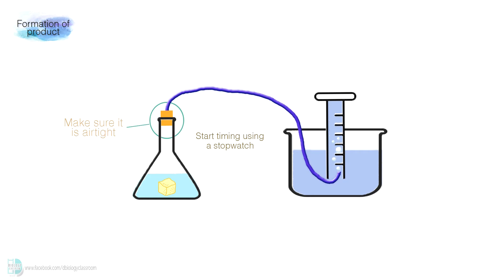Oxygen formed in the reaction will appear as air bubbles in the measuring cylinder. After a fixed time, record the volume of oxygen collected in the measuring cylinder. The rate of reaction is the volume of oxygen collected over time.